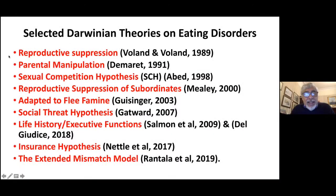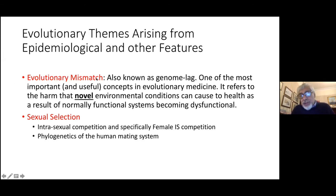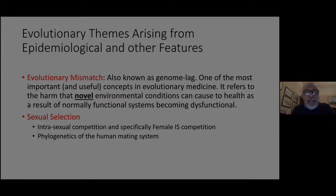This is a list of some of the better-known evolutionary theories on eating disorders, more or less in chronological order. Some of the evolutionary themes that arise include evolutionary mismatch, the issue of sexual selection and specifically intersexual competition — mainly female intersexual competition — and also the phylogenetics of the human mating system, and I'll be touching upon each of these.